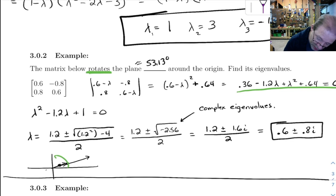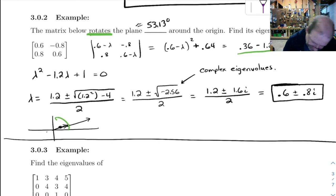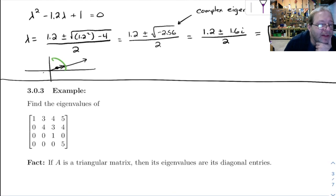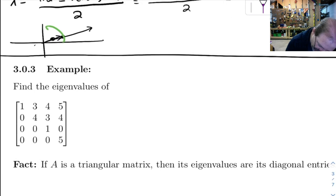So anyway, I wanted to do that example and show you, you can get complex eigenvalues. And this is a pretty typical example of how that can happen. Okay, one more example of this. Find the eigenvalues of this, and I've got the punchline right below there in the fact.